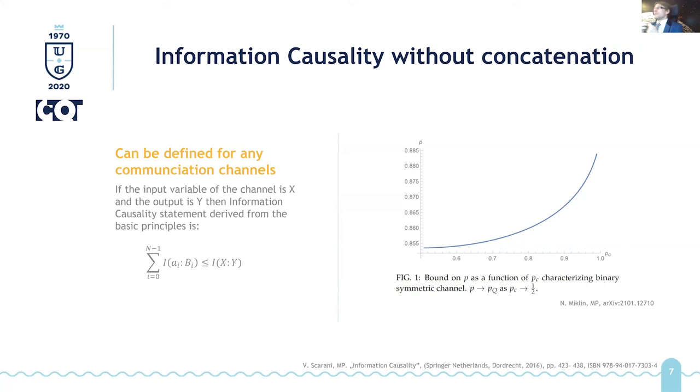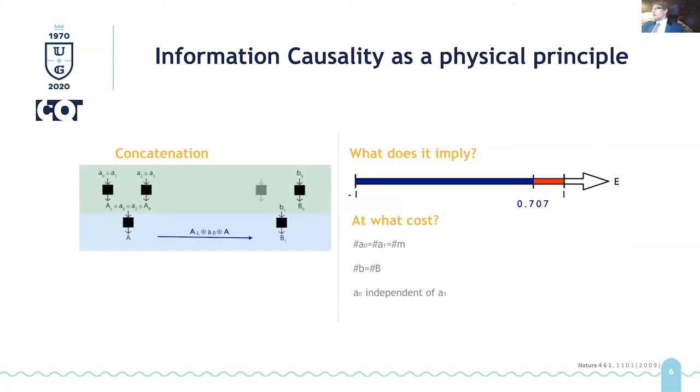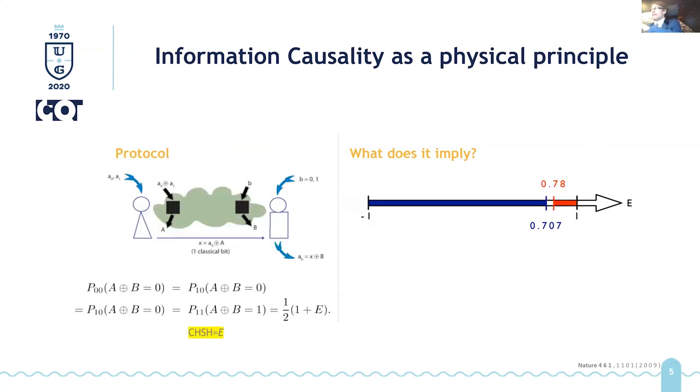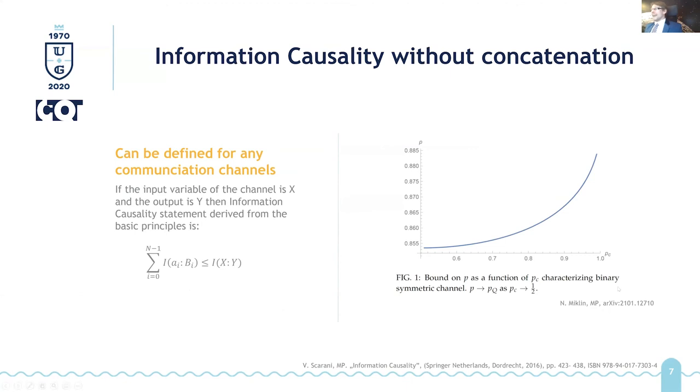And it shows that if the channel gets more noisy, the bound goes to basically 0.84, which is the expression of, which is basically Tsirelson bound. So previously, we were using this correlation function E as Tsirelson bound. But if you take one half of one plus 0.707, then you will get everything expressed in the terms of probabilities and you get exactly this bound.